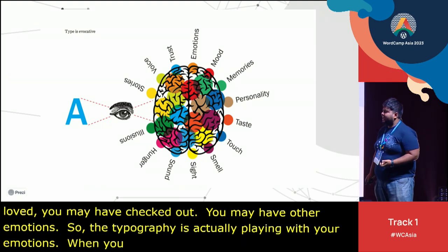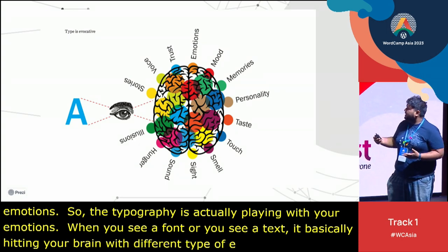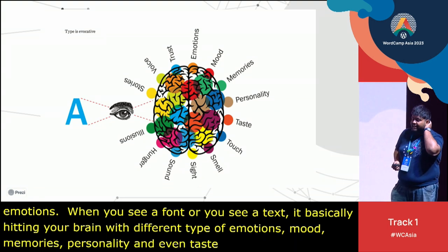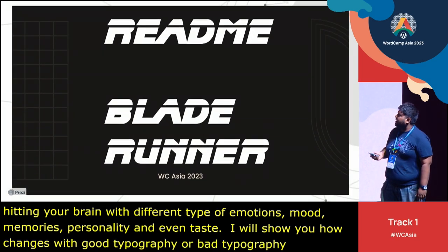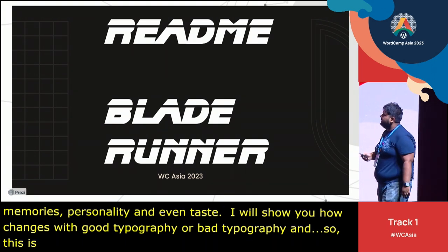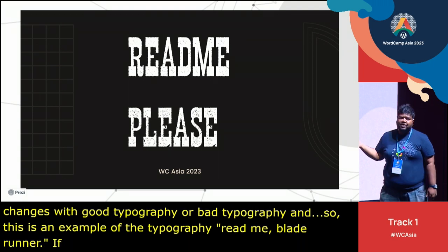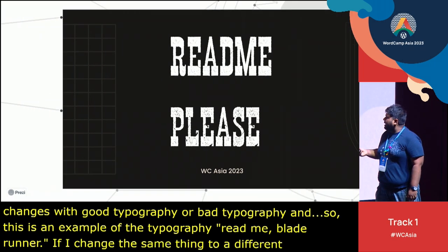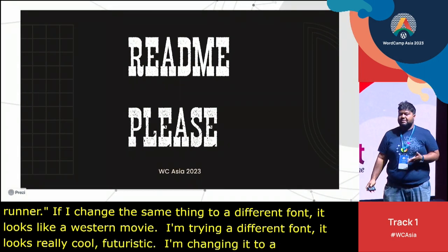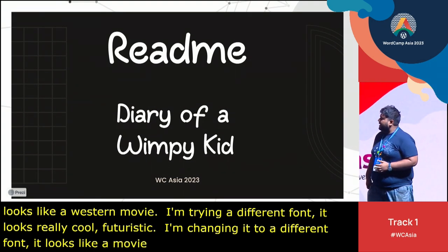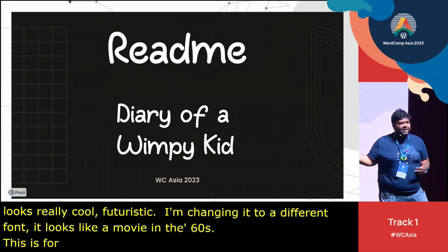When you see a font or text, it basically hits your brain with different types of emotions: trust, mood, memories, personality, and even taste. I will show you how taste changes with good or bad typography. As an example, the 'Blade Runner' title looks really cool — like a science fiction movie. But if I change it to a different font, it looks like a western movie. Changing it again gives a futuristic science fiction feel; changing it once more makes it look like a movie from the 60s. Another font makes it look like a kids' movie, with cute emotions speaking through the typography.